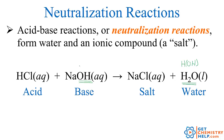The other product you always get is some kind of an ionic compound — the more generic term for an ionic compound is a salt. So the cation from the base will always combine with the anion from the acid to produce an ionic compound. The general format for a neutralization reaction is always: acid plus base gives some kind of salt or ionic compound and water.